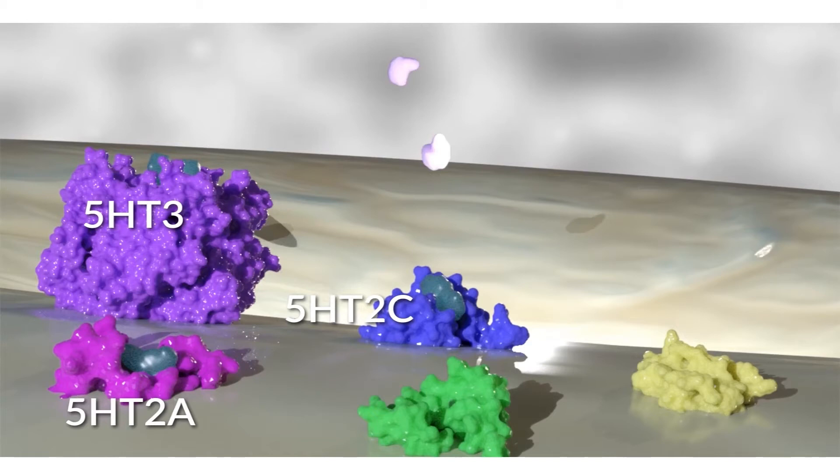Since mirtazapine blocks the 5-HT2A, 5-HT2C, and 5-HT3 receptors, the increased serotonin within the synaptic cleft is largely directed to the 5-HT1A receptors.